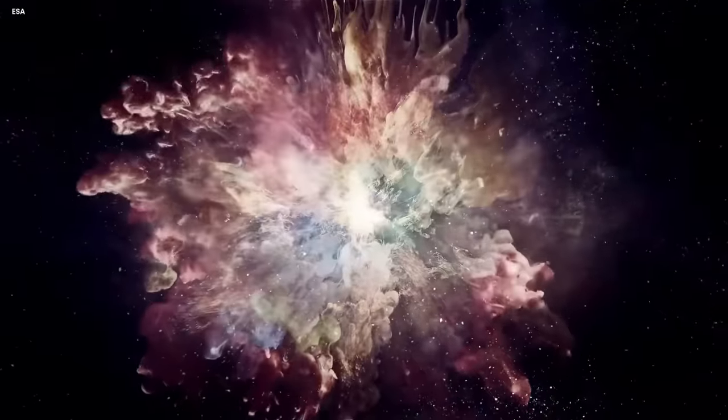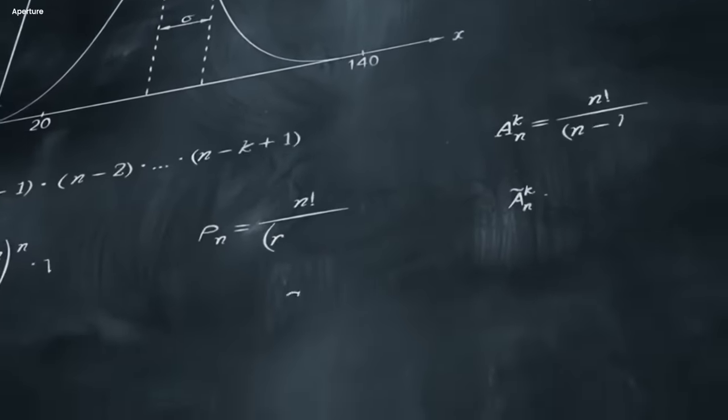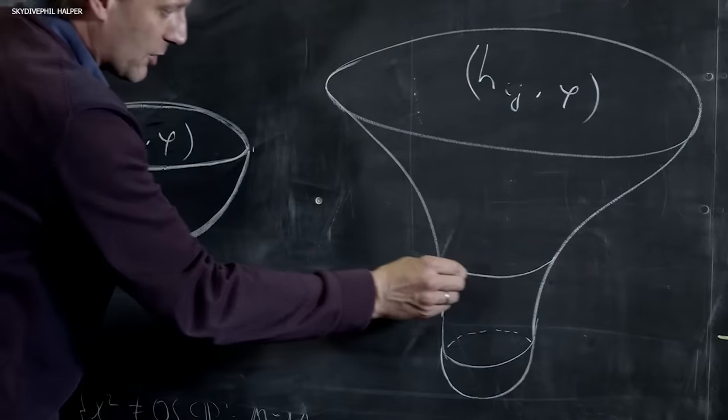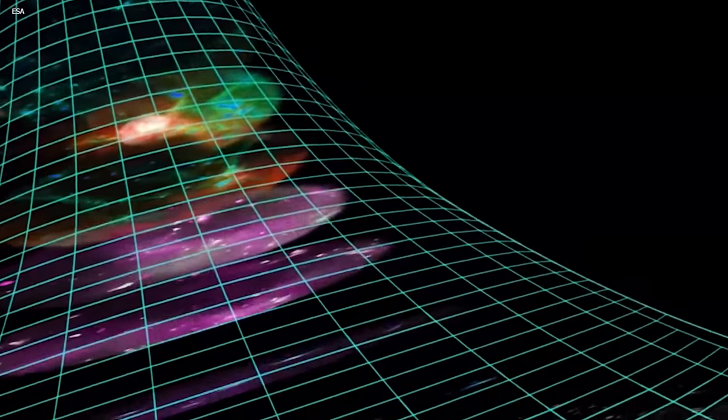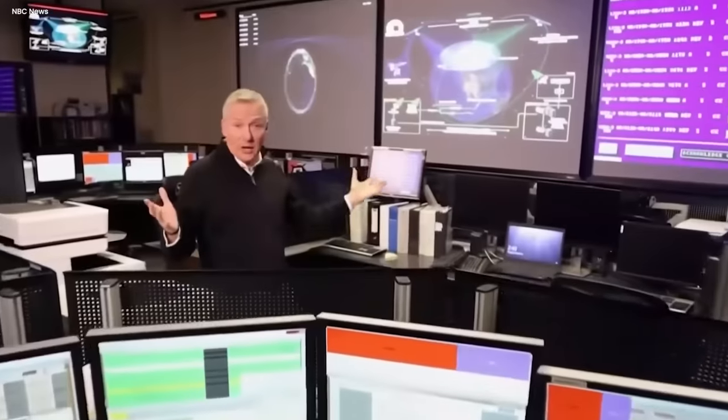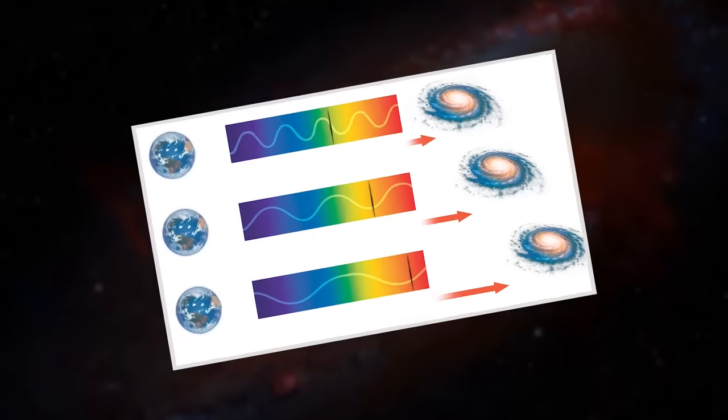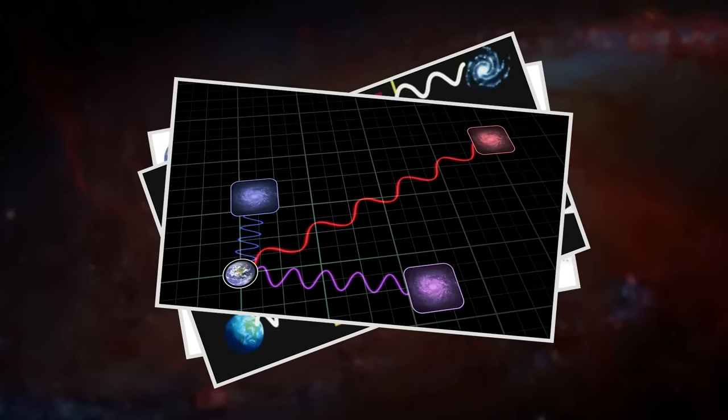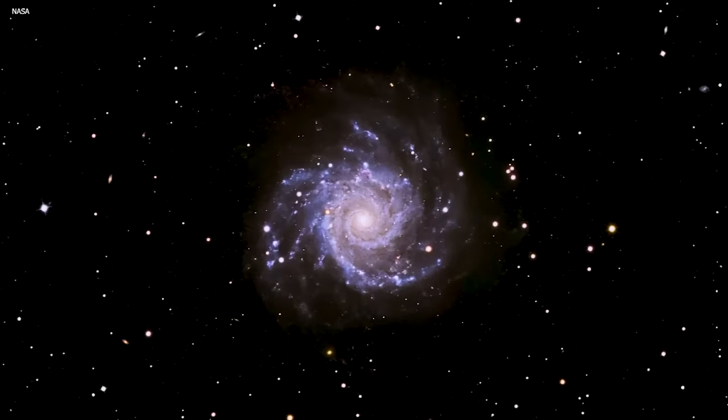As the universe continued to expand, the rate of expansion gradually slowed down. But with this information, it's important to note that even though the initial period of cosmic inflation ended, the universe continued to expand at a measurable rate. This ongoing expansion is known as the expansion of the universe, or cosmic expansion. Scientists have observed the effects of this expansion through various observations, such as the redshift of light from distant galaxies. The redshift indicates that as the universe expands, light waves get stretched and shifted towards longer wavelengths, shifting them towards the red end of the spectrum. We'll get into the details of this later on in the video.